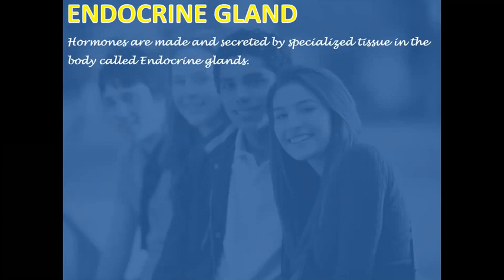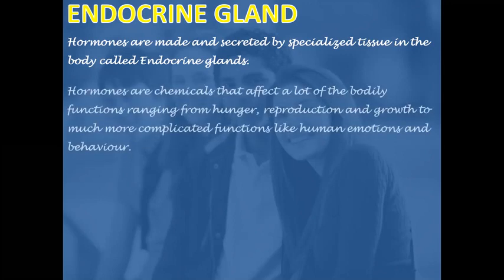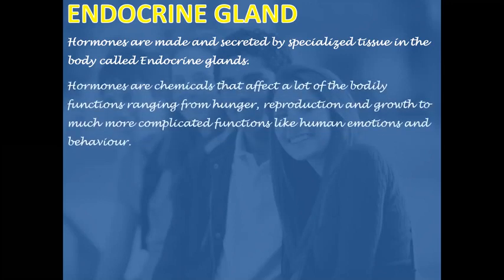Hormones are made and secreted by specialized tissue in the body called endocrine glands. Hormones are the chemicals that are responsible for controlling and regulating the activities of certain cells and organs. Hormones are chemicals that affect a lot of bodily functions ranging from hunger, reproduction, and growth.